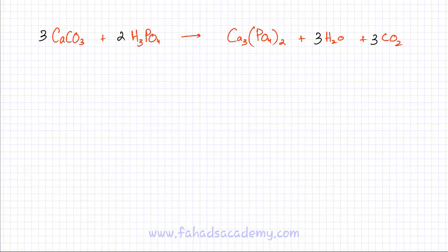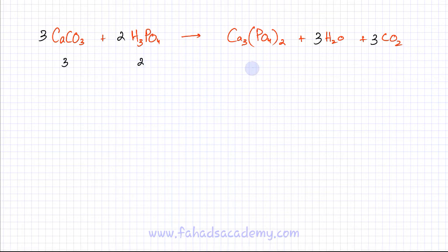Now this chemical equation is a slightly more complicated one — it's longer and has more numbers, more difficult to balance. But this is a balanced equation. The ratio tells us that three calcium carbonates are reacting with two phosphoric acids (H₃PO₄), producing one Ca₃(PO₄)₂ (calcium phosphate), three water molecules, and three carbon dioxide molecules.